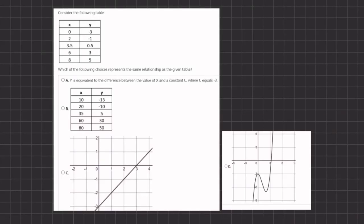All right, so in this problem, we are given a graph, and we want to find which of the following choices represents the same relationship as the graph we are given.